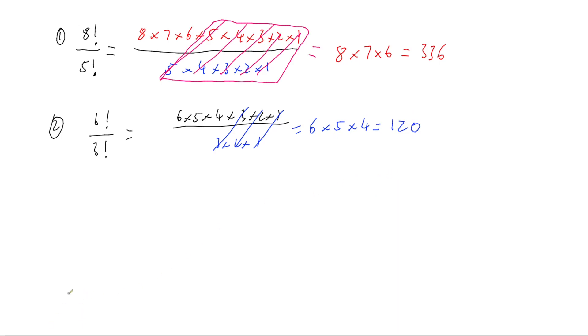It even works if we flip the fraction. For example, what if I do 2 factorial divided by 4 factorial? Well, 2 factorial is simply 2 times 1, and 4 factorial is 4 times 3 times 2 times 1.